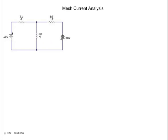The first step is to identify all of the meshes and label their mesh currents. In this circuit, we have one, two meshes. This one, or mesh one, I'm going to call that I1. And this one, mesh two, I will call I2.